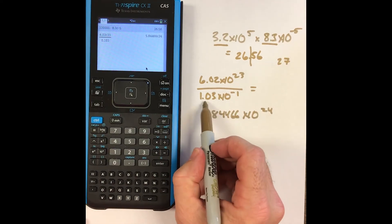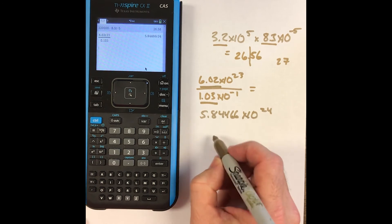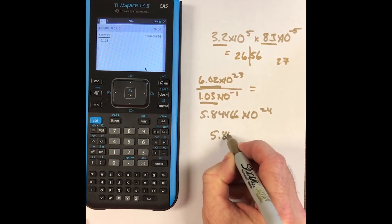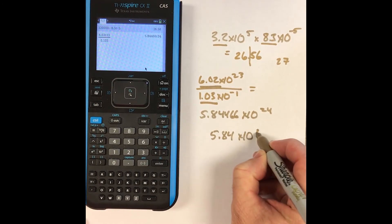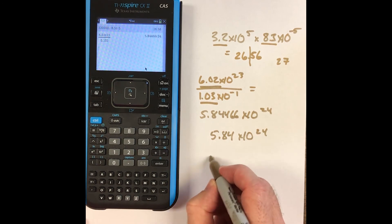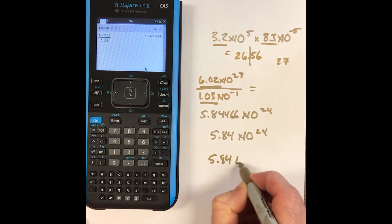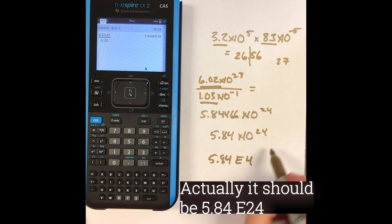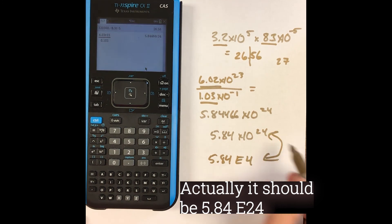Now from a significant figure perspective, there's three here and three here. So we're just going to say 5.84 times 10 to the 24th. If you're trying to type this into a computer, you would write that as 5.84E24. These two numbers are the same.